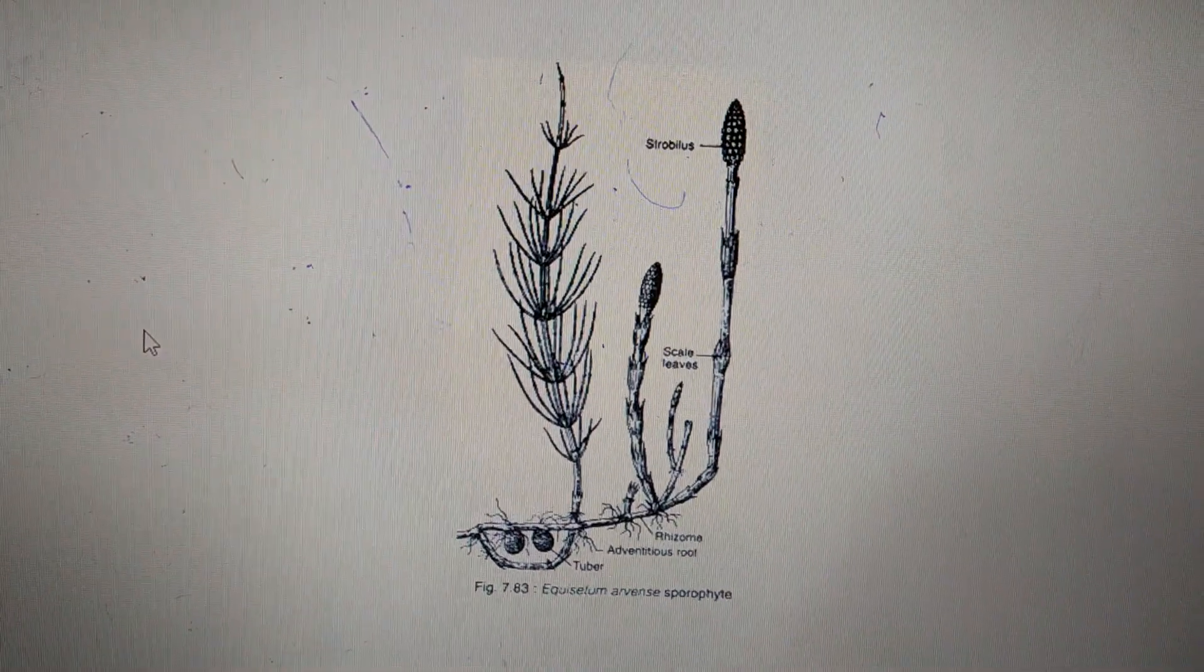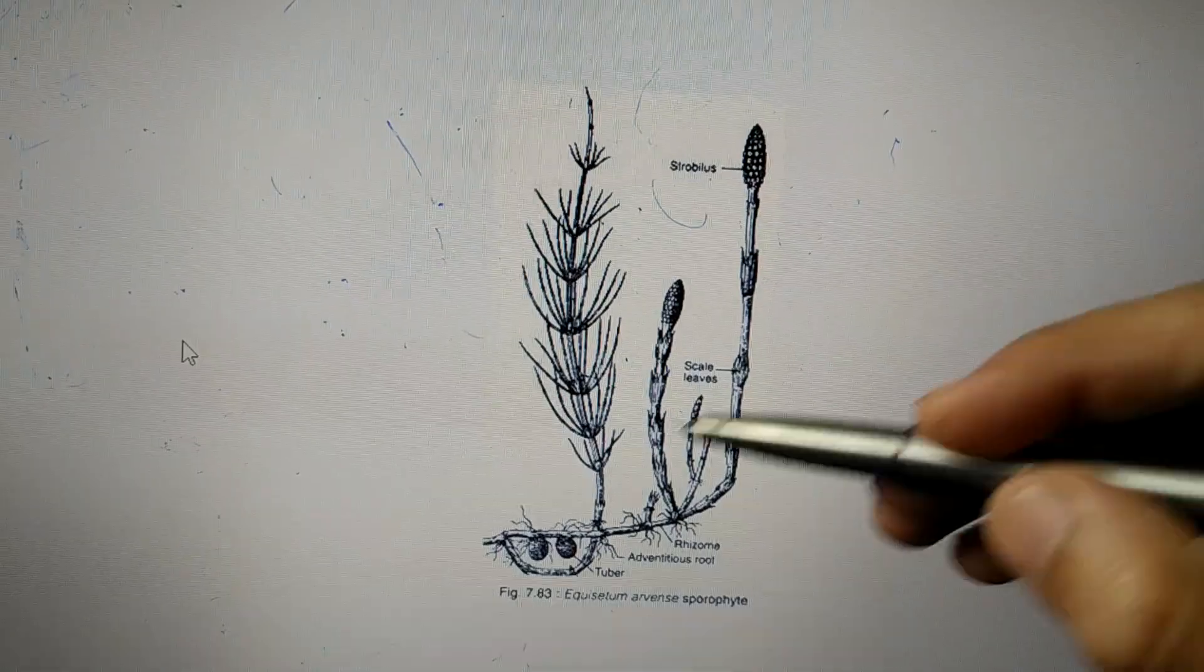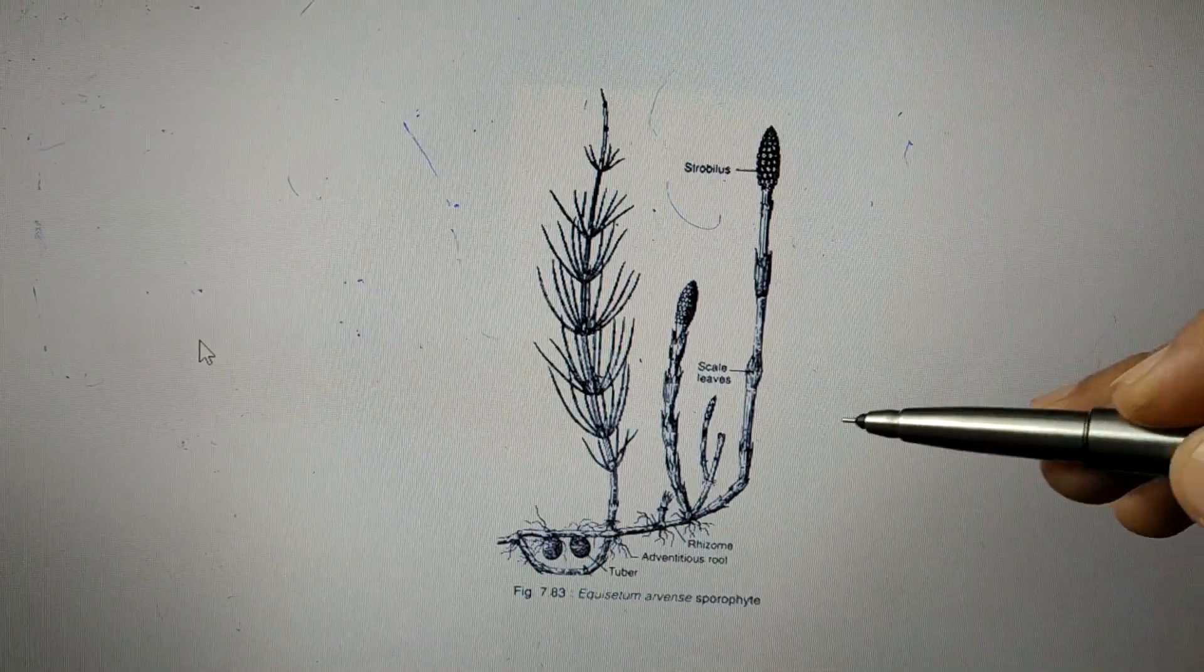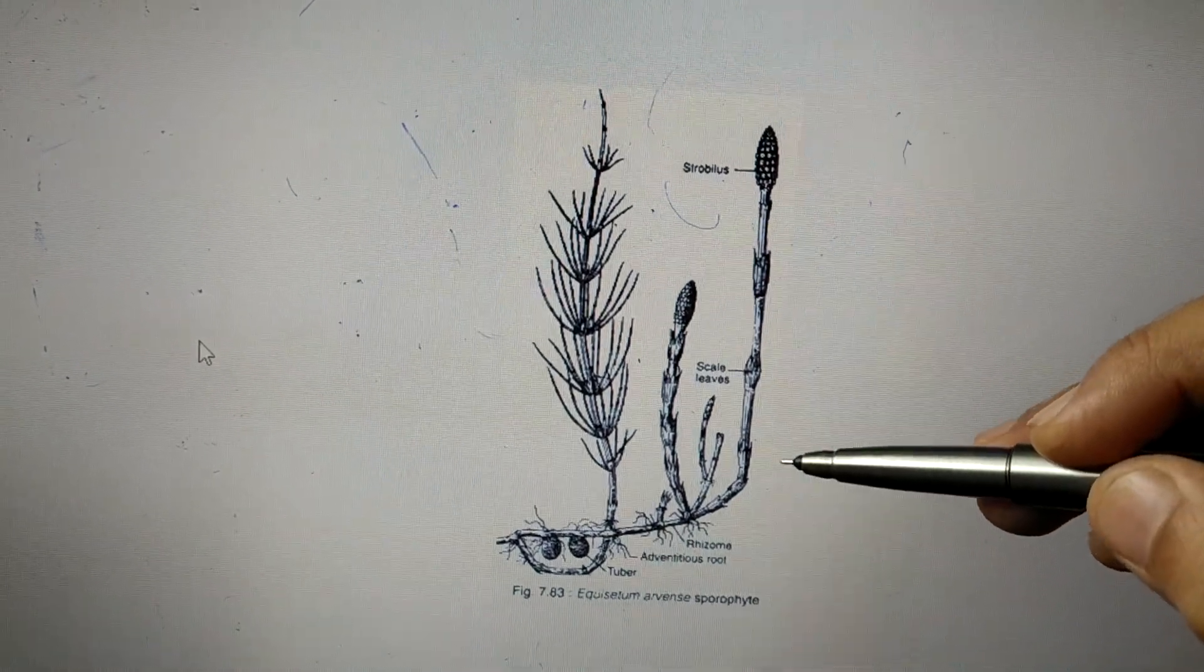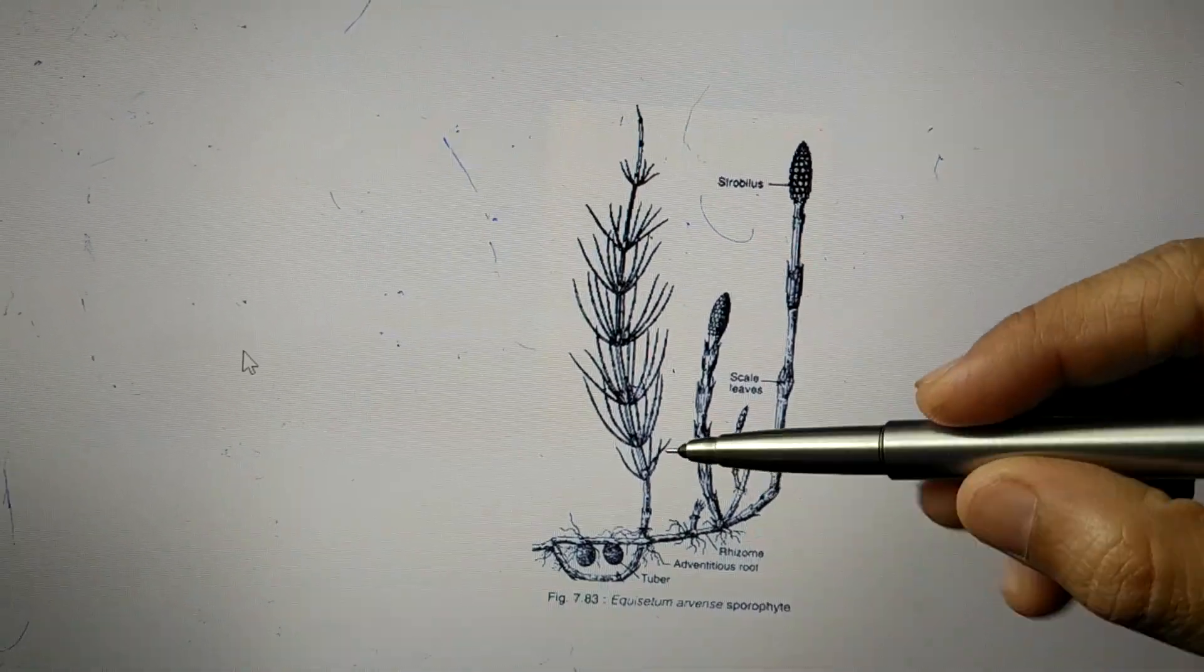The sporophytic plant body of Equisetum is divisible into three regions: rhizome, stem, and leaves. The stem is perennial in nature, lasting for many years. It is branched underground, whereas the aerial shoot is annual, lasting for one year.